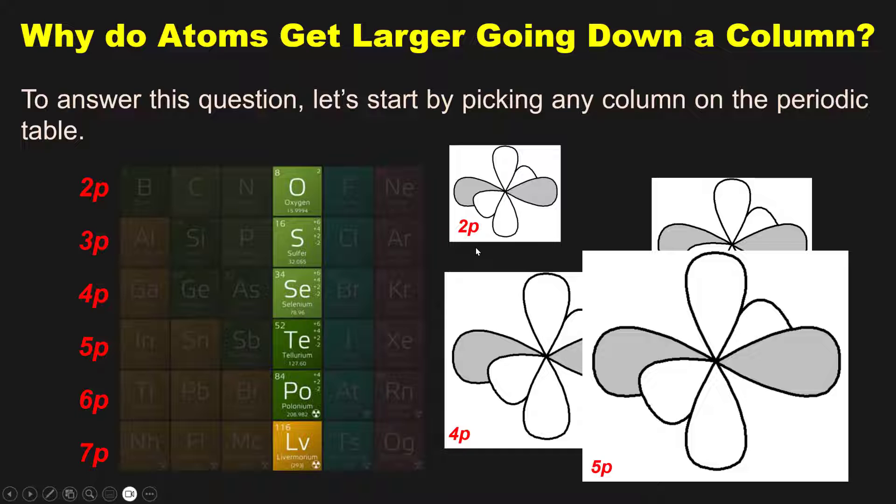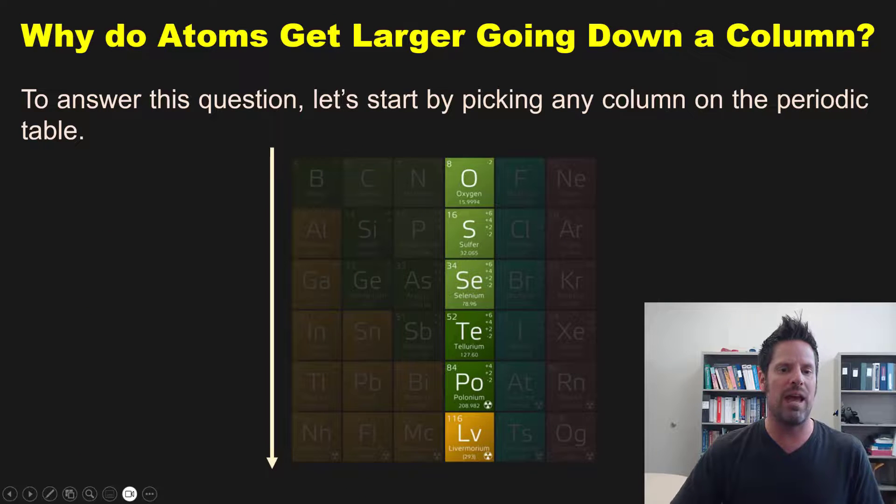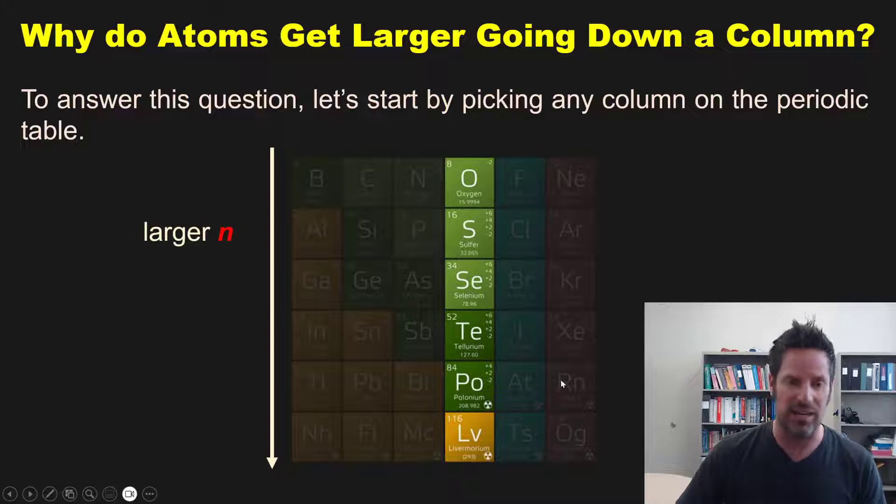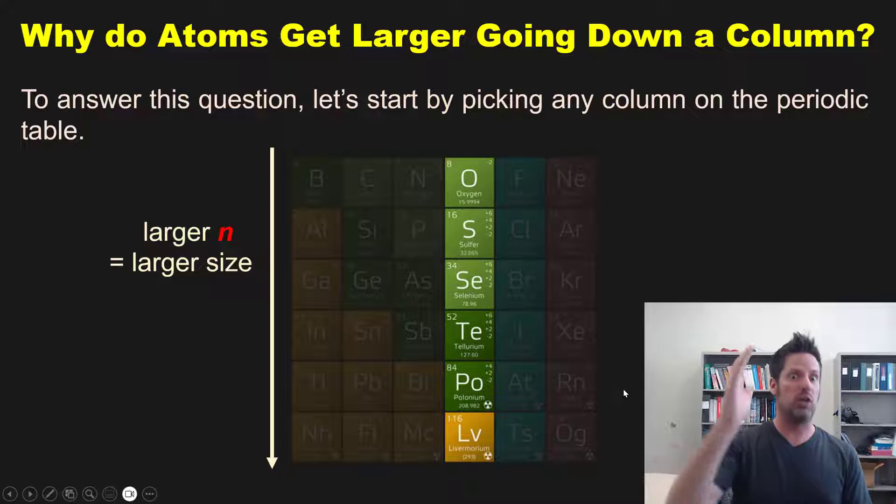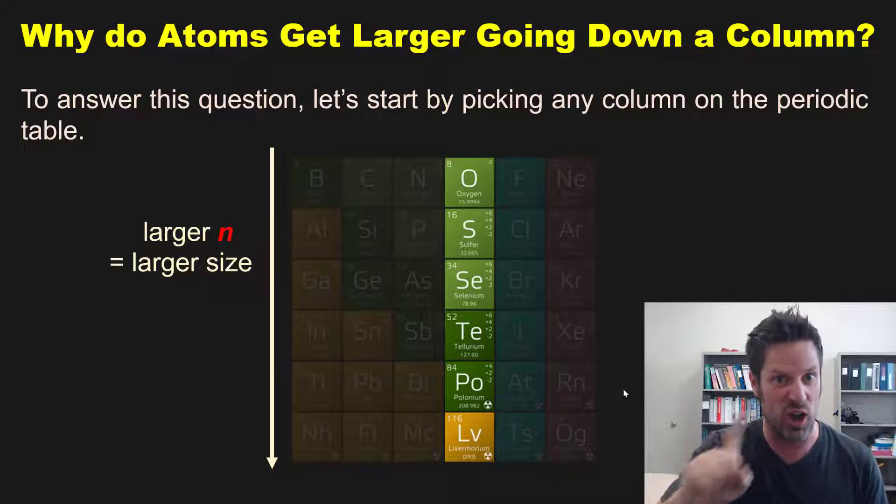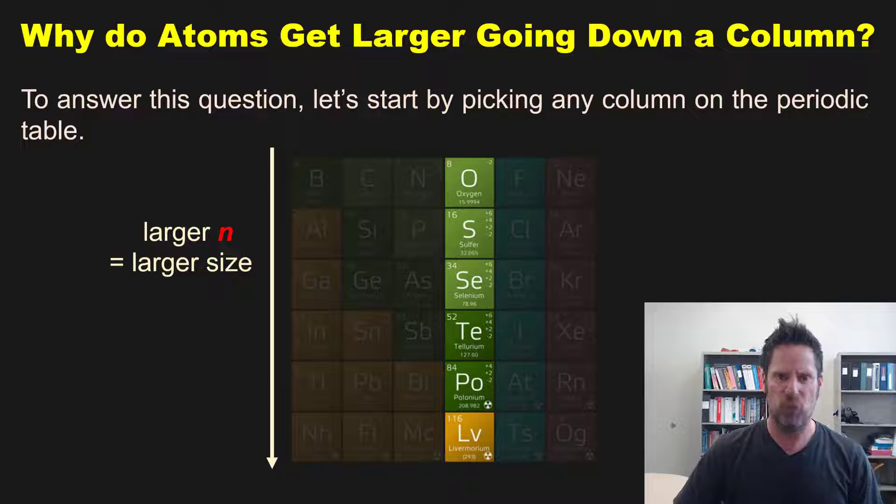They all have the same shapes, it's just that because the principal quantum number 2, 3, 4, and 5 gets larger, the size of those orbitals gets larger. Thus, the reason why elements get larger as you go down a column is because their principal quantum number n is getting larger. Hence, larger principal quantum number equals larger size.